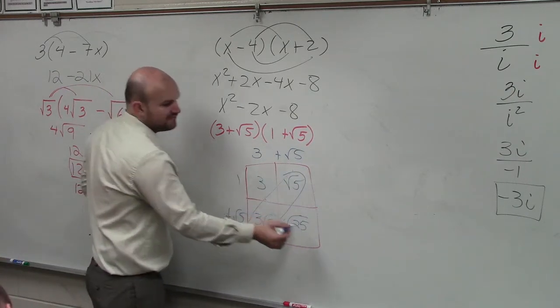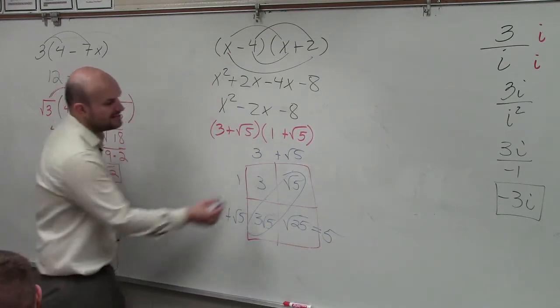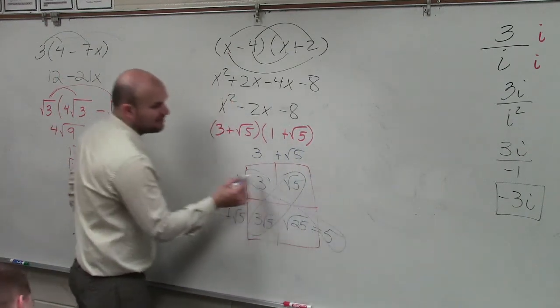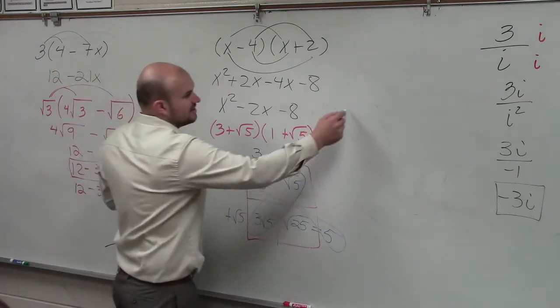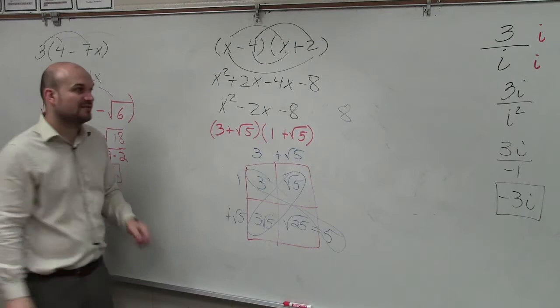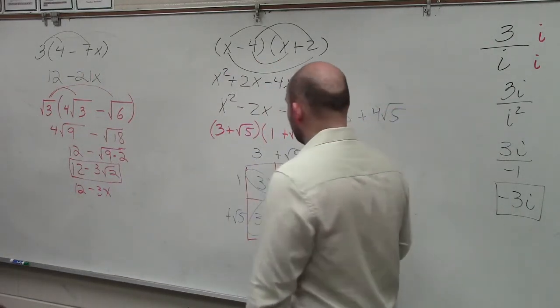And we know the square root of 25 is equal to 5. So now I see that these are both numbers. So my final answer is 3 plus 5, which is 8. Square root of 5 plus 3 square root of 5 is going to be 4 square root of 5.